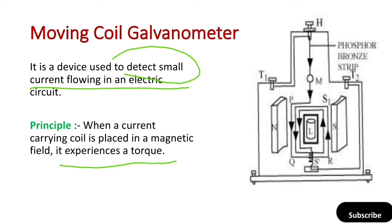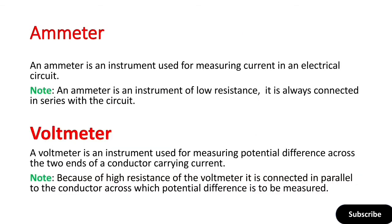Next is the ammeter. An ammeter is an instrument used for measuring current in an electrical circuit. We use a galvanometer to detect small current, but if we need to measure a large current, we use an ammeter instead. If large current is passed through a galvanometer, it will be destroyed because it can be deflected beyond its range. This is why we use an ammeter to measure current in an electric circuit.